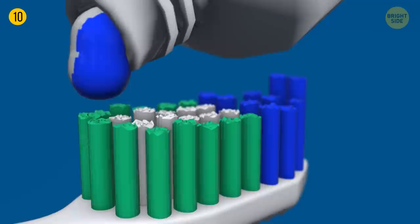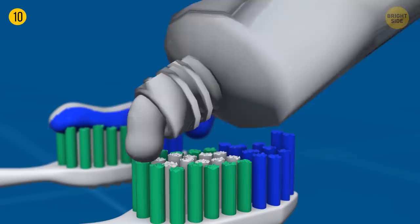Toothpaste stripes aren't more than a marketing trick. In the 70s, a leading toothpaste brand introduced a blue stripe claiming their toothpaste had double action. Solid white toothpaste has the same functions, though.